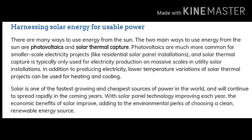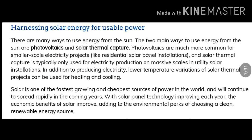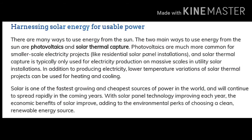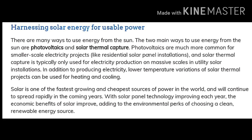Next point is how do we harness solar energy for usable power? There are many ways to use energy from the sun. The two main ways are photovoltaics and solar thermal capture. Photovoltaics are much more common for smaller scale electricity projects like residential solar panel installation, and solar thermal capture is typically only used for electricity production on massive scales in utility solar installation. In addition to producing electricity, lower temperature variation of solar thermal projects can be used for heating and cooling. Solar is one of the fastest growing and cheapest sources of power in the world and will continue to spread rapidly in the coming years.